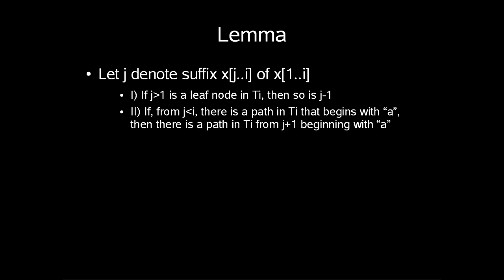We start by introducing a lemma. Let j denote suffix x[j..i] of x[1..i]. The following is true. First, if j is larger than 1 is a leaf node in our tree Ti, then so is j minus 1.